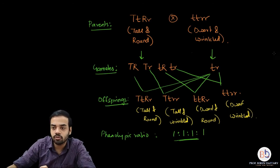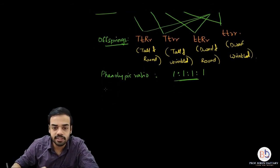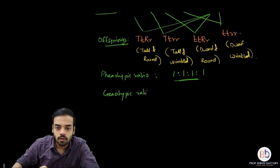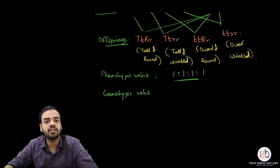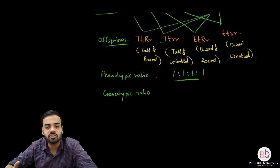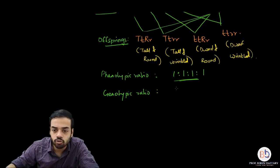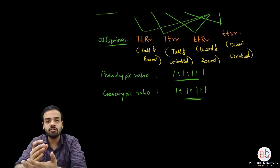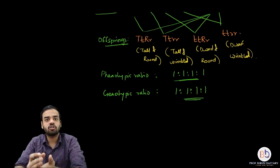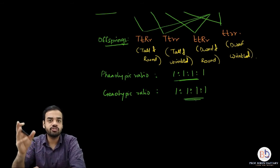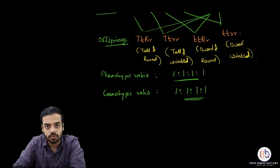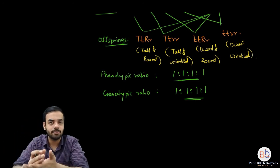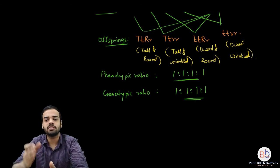If you want to write down the genotypic ratio — if you see the four offspring, all of them have different genotypes and a different combination of alleles. So the genotypic ratio is also going to be 1:1:1:1. Please remember, whether you are doing a monohybrid test cross or a dihybrid test cross, both the genotypic and phenotypic ratios will always remain the same. In the case of a monohybrid test cross both ratios are 1:1, and in the case of a dihybrid test cross it is 1:1:1:1.